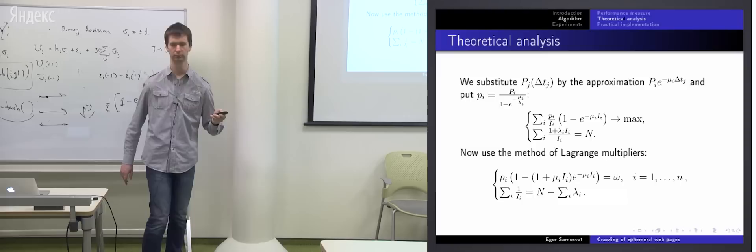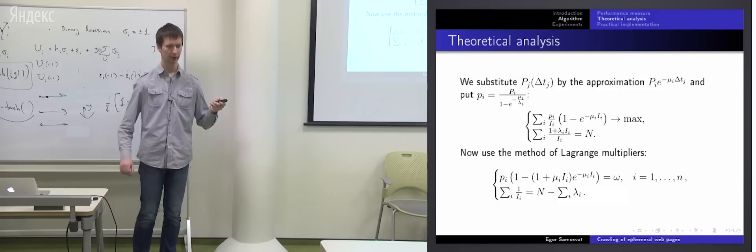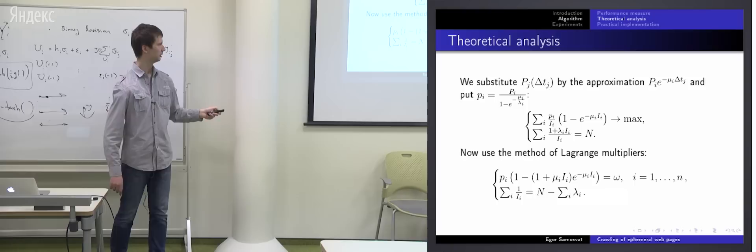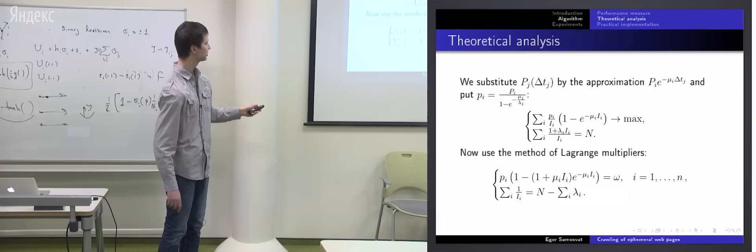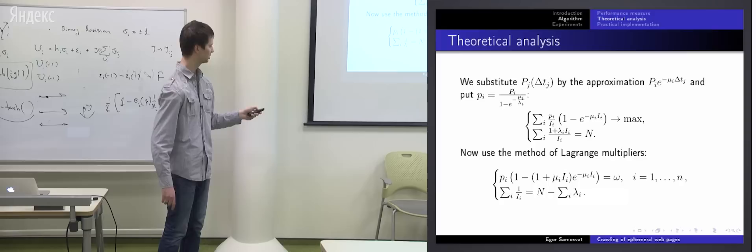Okay, we used the method of Lagrange multipliers to solve it. Here omega is Lagrange multiplier. Okay, we failed to find an analytical solution for this problem. But fortunately, this problem can be solved using bisection. Okay, let me explain. Here we just need to find Lagrange multiplier. As soon as we find Lagrange multiplier, we can find i sub i from these equations and to check if our resource constraint is satisfied. It's better to explain it using a picture.